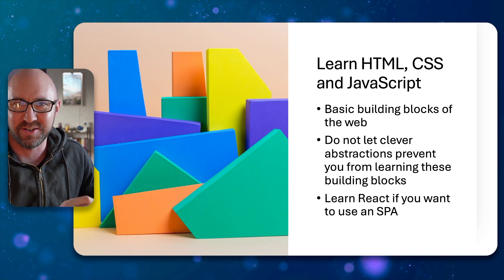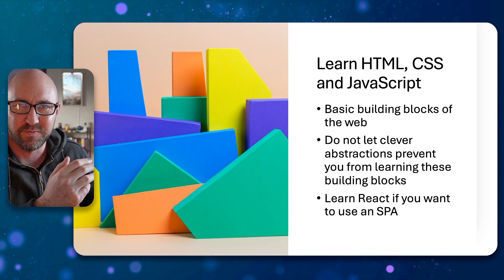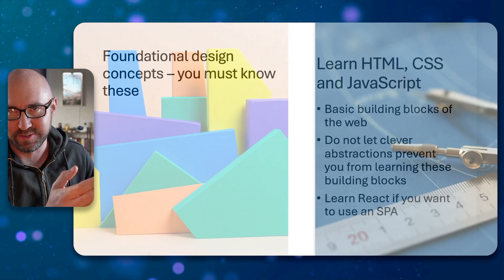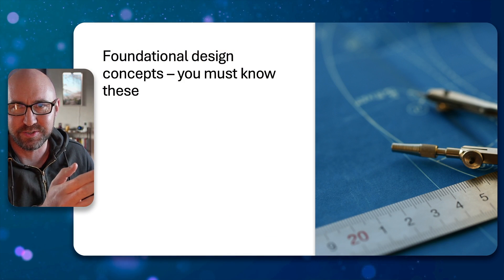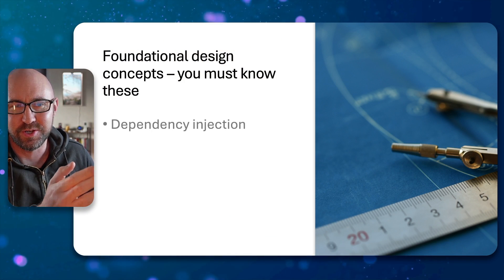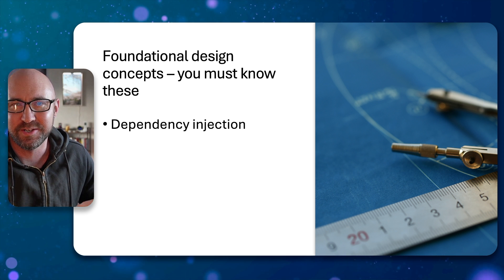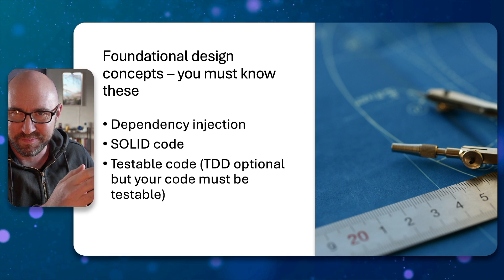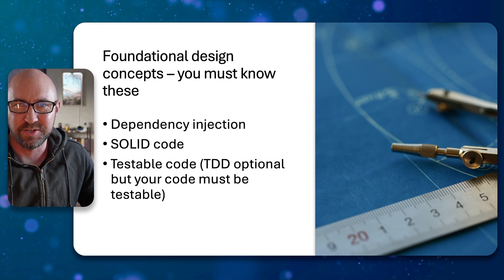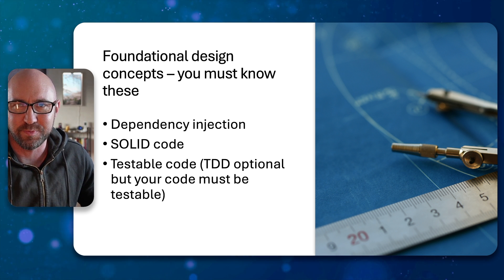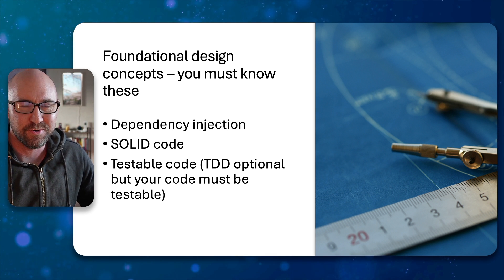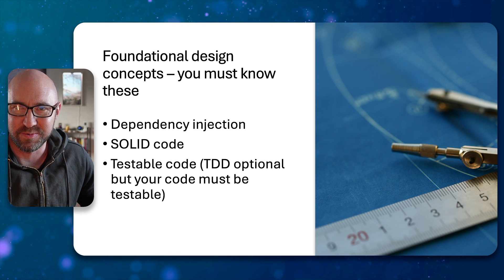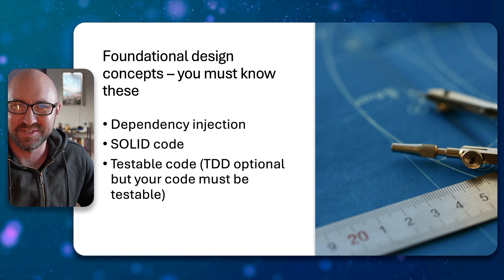Certainly don't try to learn Blazor before you can do MVC. For foundational software architecture concepts, you need to know the following: dependency injection, SOLID code, and be able to write testable code. You don't need to do strict TDD — 100% red-green refactor at this stage in your career — but you need to be able to write testable, decoupled code.